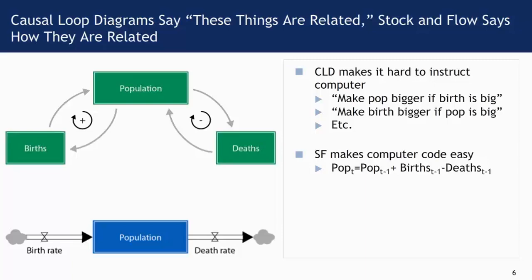But if we have a stock and flow diagram, it directly suggests a computer code. The basic demographic identity comes right out of the model: the population at time t is the population at time t minus one plus births in the last period minus deaths in the last period. The equation comes right out of the model. That makes software like Vensim able to simply look at our diagrams and know what equations we're thinking from the graphical approach to modeling.